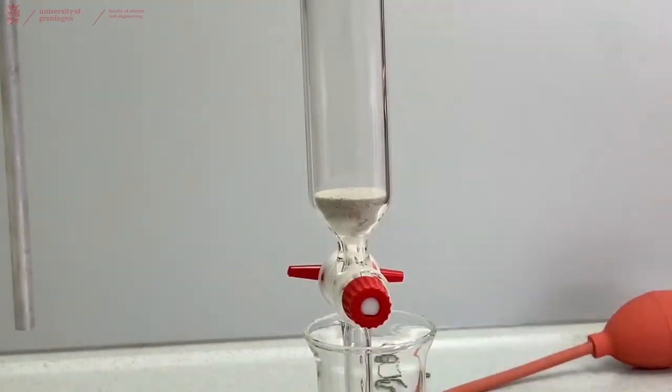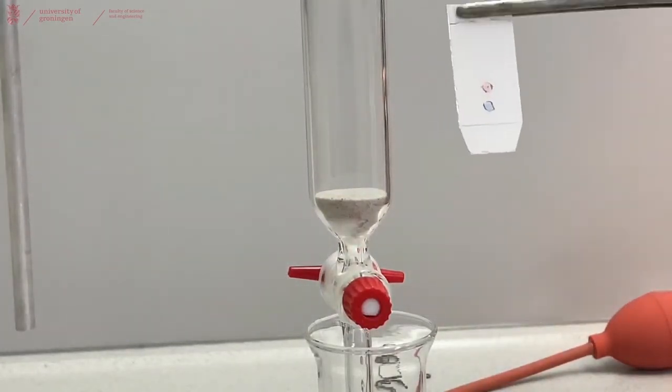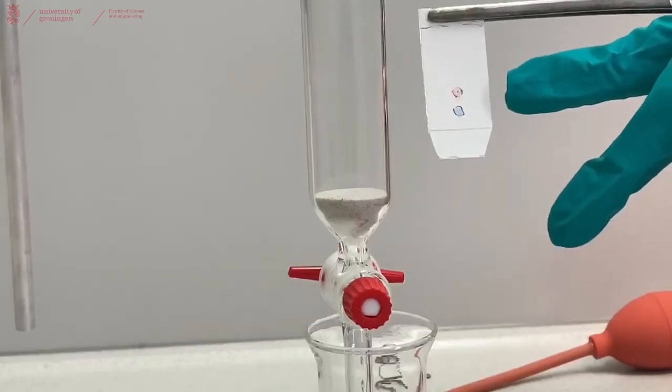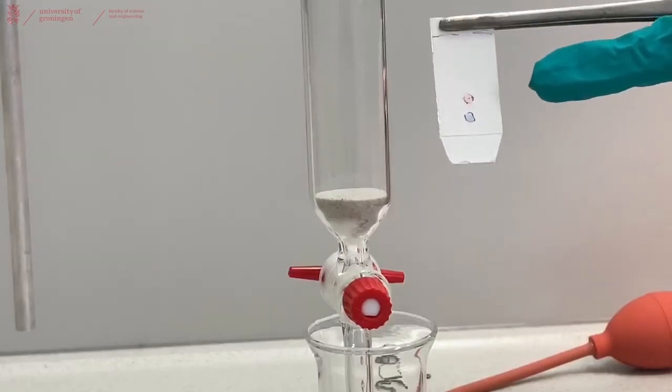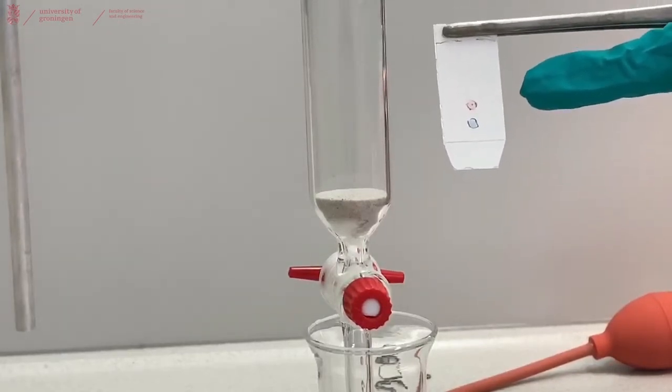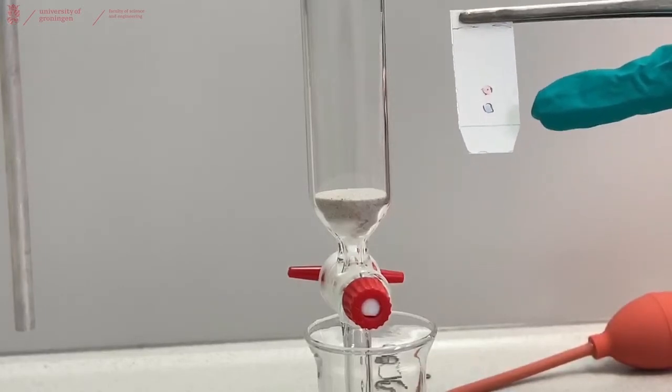Now that we have prepared this, we can continue to prepare the rest of the column. But before doing that, make sure that you check by TLC that your product that you want to isolate is at an RF value of around 0.3 in the eluent that you want to use. In that case, it's the red spot or the top spot for those that are colorblind. And the blue spot is at the bottom, and that is our impurity that we don't want.